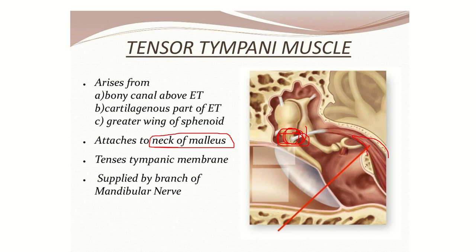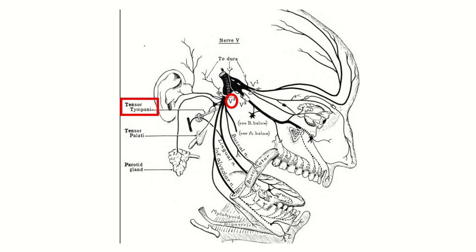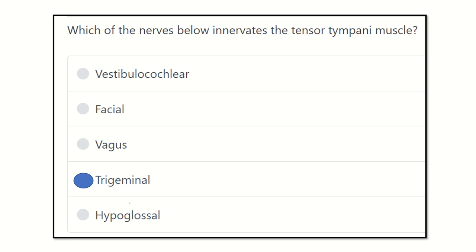The most important point is that the tensor tympani muscle is supplied by the mandibular nerve. The mandibular nerve is the third division of the trigeminal nerve. Since there is no option for 'mandibular nerve' directly, our answer is the trigeminal nerve. Here we can clearly see the tensor tympani muscle is supplied by the mandibular division of the trigeminal nerve.